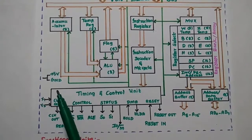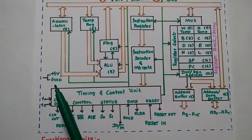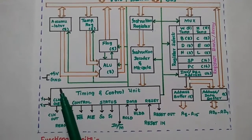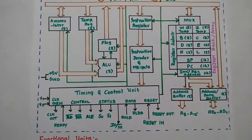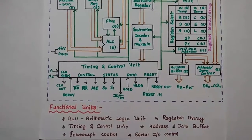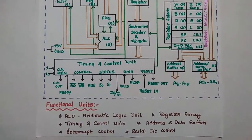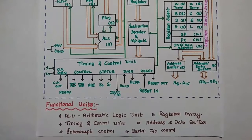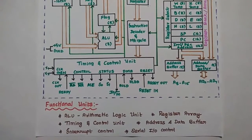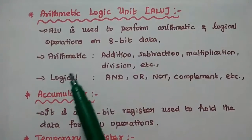The microprocessor requires plus 5 volts for its operation, with one pin grounded. The main functional units are: ALU, register array, timing and control unit, address-data buffer, interrupt control, and serial input-output control.